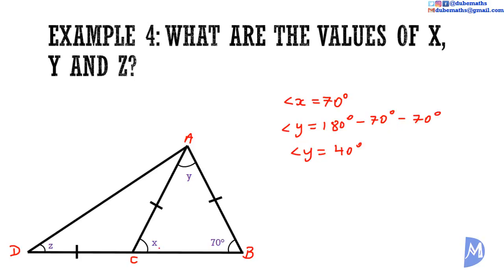Angle X is the exterior angle to triangle ACD. Thus, angle X — which we know to be 70 degrees — is equal to the two opposite interior angles: angle Z and angle CAD. Angle Z and angle CAD are equal because triangle ACD is an isosceles triangle with two equal sides, making those two angles equal. So, angle CAD equals Z as well. Therefore, Z plus Z equals 70 degrees, giving angle Z equal to 35 degrees.